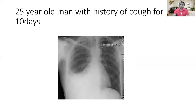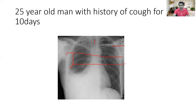Similarly, there is a 25-year-old man with a history of cough for 10 days. The clavicle is vertical and scapula is outside, so this is probably the PA view. The upper and middle zones seem normal. But in the right lower zone, there is homogeneous opacity with blunting of the costophrenic angle — we do not see the costophrenic angle here. So this is the chest X-ray of pleural effusion.